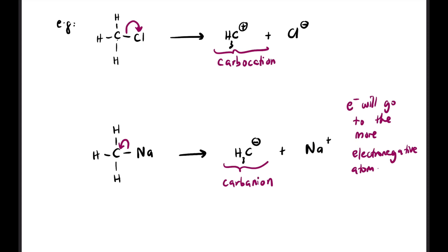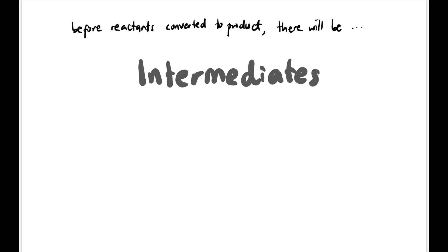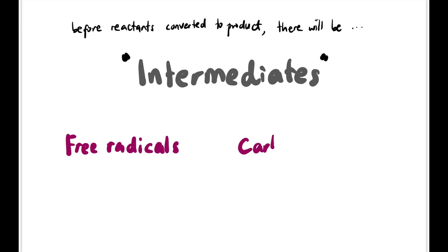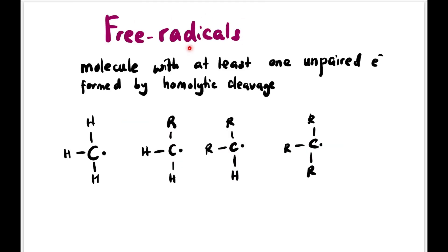Before reactants are converted to products, there will always be intermediates. The intermediates in this syllabus are free radicals and carbocations — though there is also carbanion. Free radicals are molecules with at least one unpaired electron, produced through homolytic cleavage.